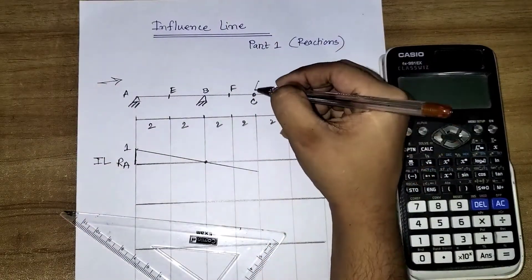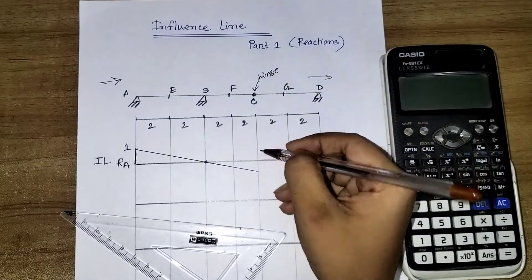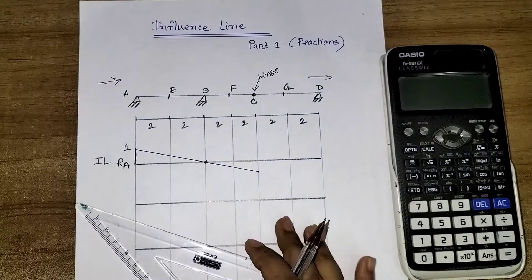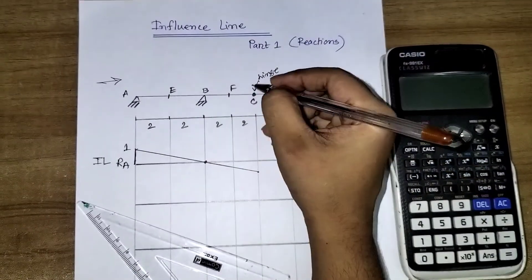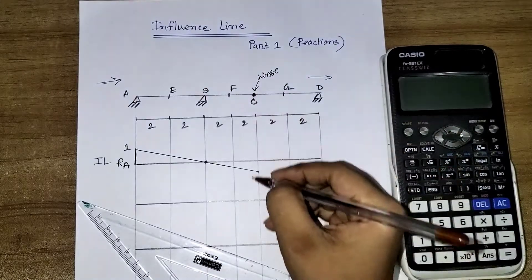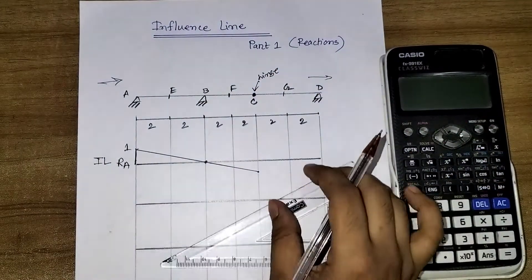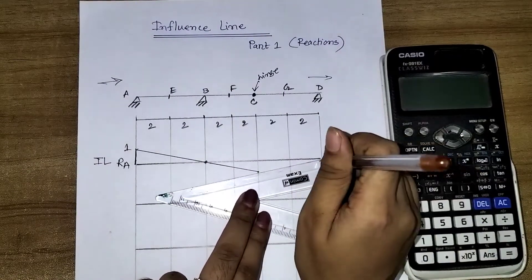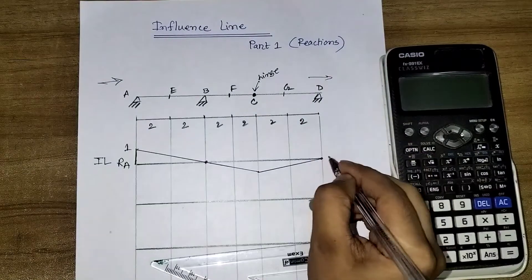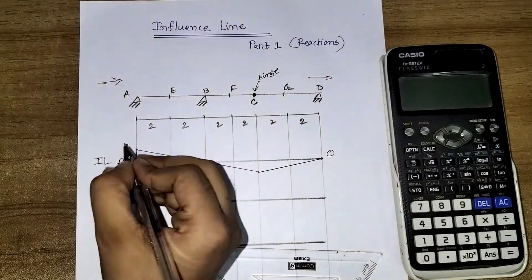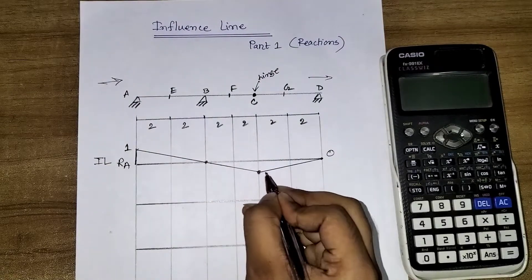As it is a hinge, so it will drag the span towards this point. Hinge is not something that is fixed, so it is gonna move upward or downward. Then it will come to this support D to have a zero point.